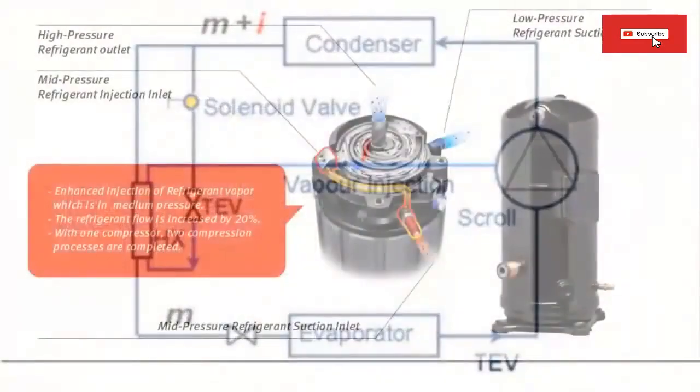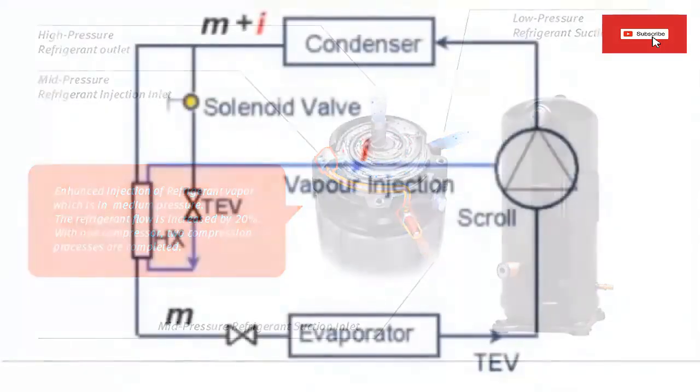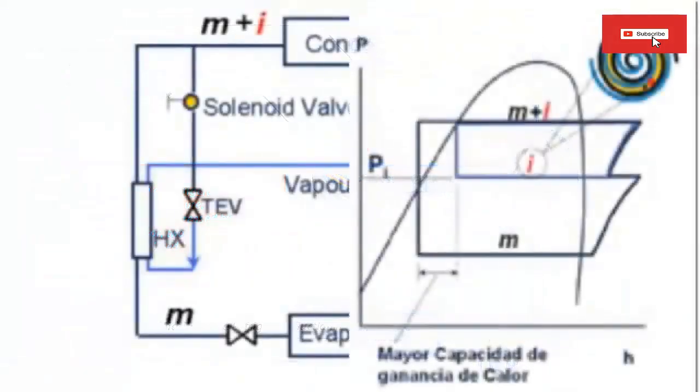14. This strategy can provide a means to modulate capacity at low thermal loads by cutting off steam injection into the compressor. 15. This type of subcooling is more significant compared to a heat exchanger between the liquid line and the suction line.